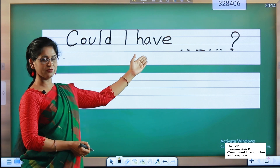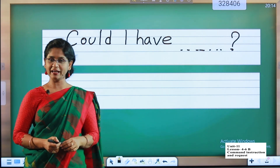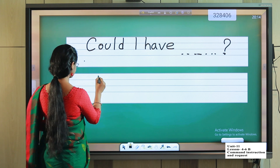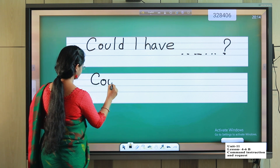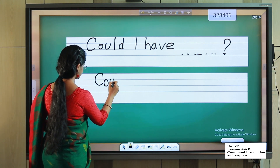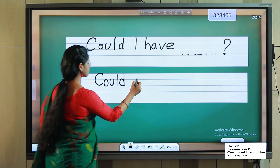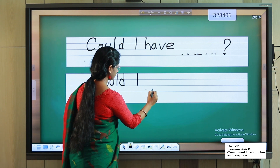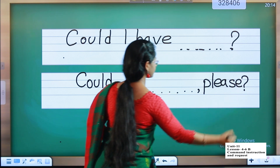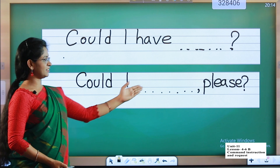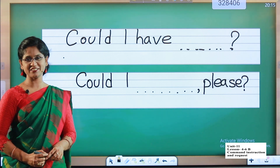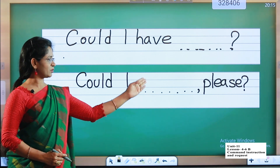For homework, I am giving you the structure: 'Could I have?' You have to put anything and make five sentences. Could I give you? Could I give you? Can you tell me? Can you tell me, please? Instructions: Could I give you. Can you tell me, please?